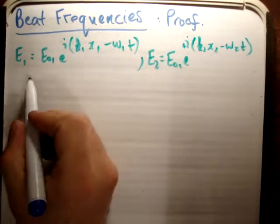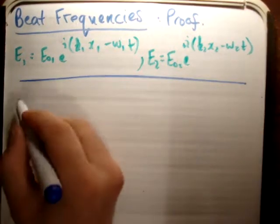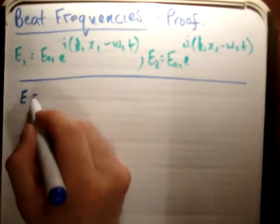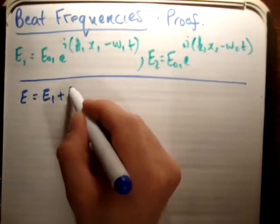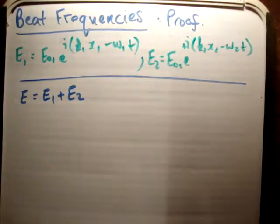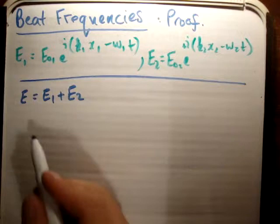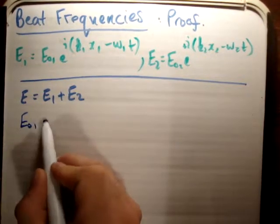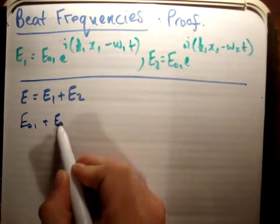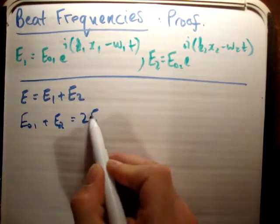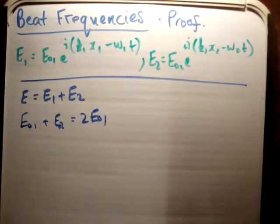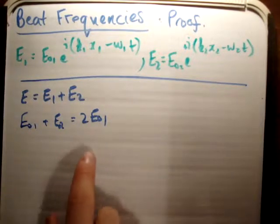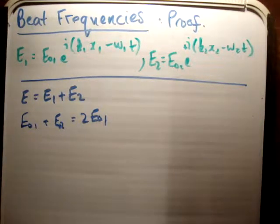So the first thing I'm going to notice is that we're saying that these are of the same amplitude. So as a result, E is equal to E1 plus E2 first of all. Now these are linear systems, so that's the point. The next thing is we're going to have that E01 plus E02 is equal to twice E01. We're saying that the amplitudes are equal. That's the point of these beat frequencies, they are of the same amplitude.